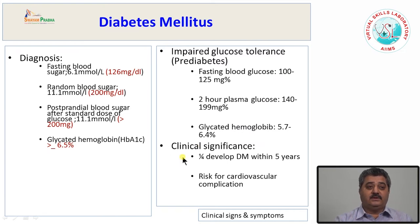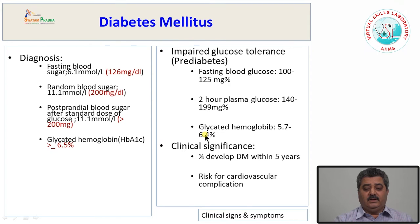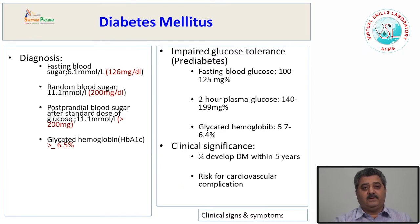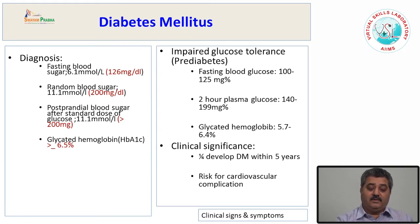The significance of diagnosing pre-diabetes or impaired glucose tolerance is important. Large studies have found that one-fourth of pre-diabetic patients develop diabetes mellitus over time, mostly within five years. Also, all pre-diabetic patients have more chances of cardiovascular complications compared to the general public. Therefore, these patients must be kept under strict diabetic control.